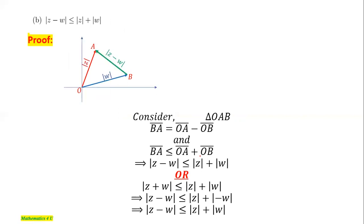For part d, we use a geometric approach. Consider points O, A, B where the norm of z is the distance OA and the norm of w is the distance OB. From vector addition, OB + BA = OA, so BA equals z - w. The length of BA, which represents |z - w|, corresponds to one side of the triangle formed by these three points.